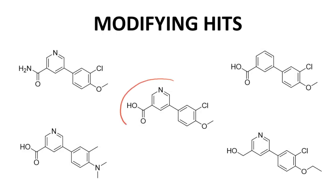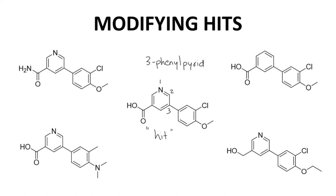Let's assume that the compound in the middle of the slide is one of our hits. Compounds are often described based on their scaffold, which is the core structure of a molecule. The scaffold normally includes rings in the molecule and any connections between the rings. In this case, our hit is a 3-phenyl pyridine. The 3-phenyl pyridine scaffold displays different functional groups such as the carboxylic acid and methoxy group for interaction with the target.